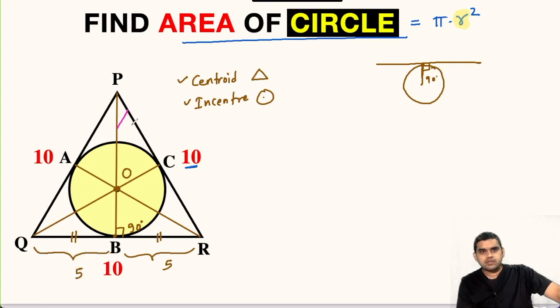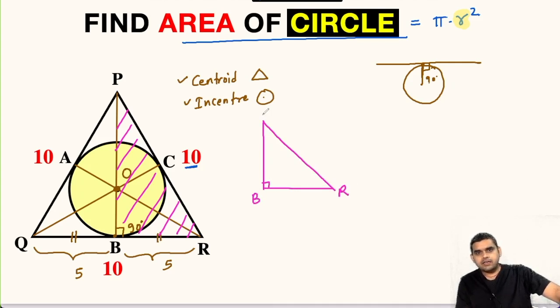Now let us focus on this triangle PBR. Let me draw it outside. So this is point B, R and P. BR is 5 units, PR is 10 units and PB is unknown to us. So we will use Pythagorean theorem.